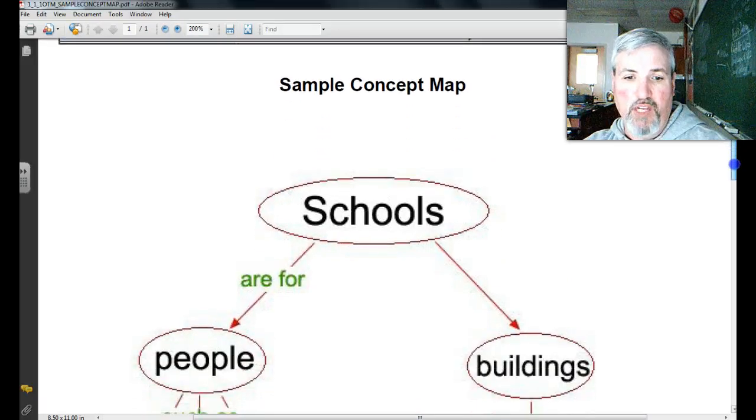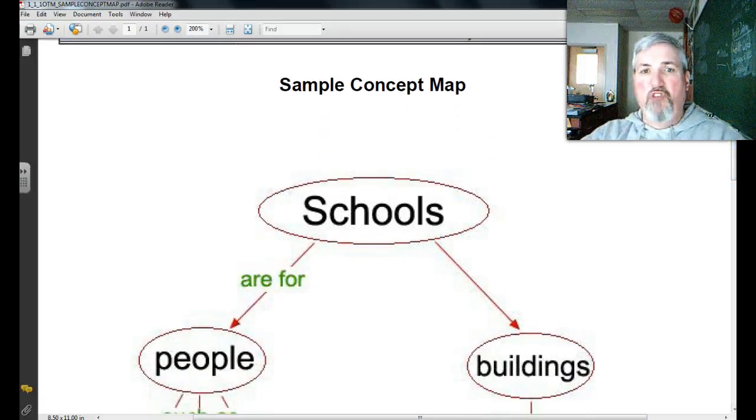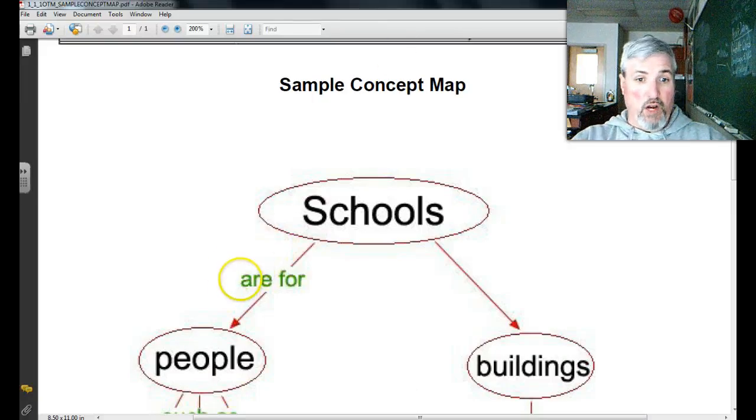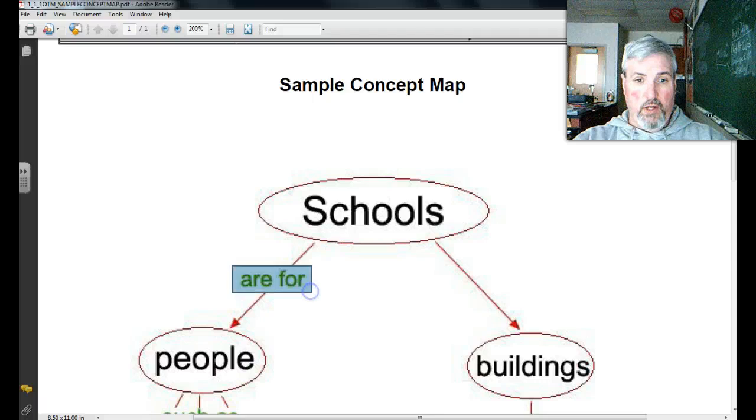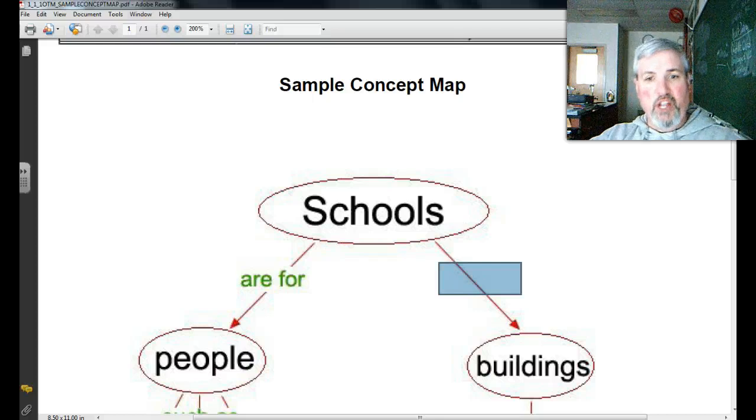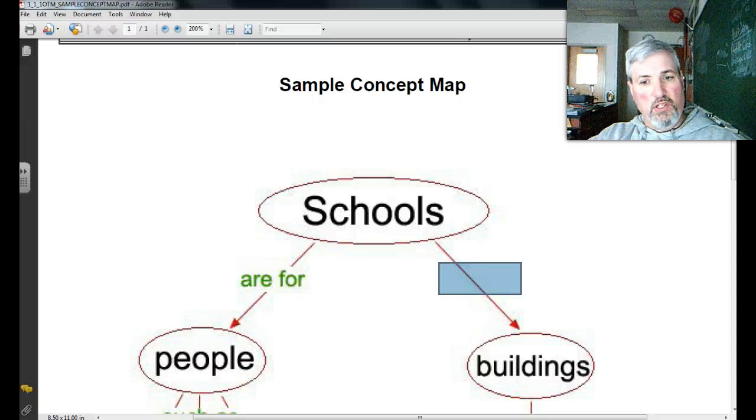And I'm going to give you the first level. Schools are for people. So you can see the words are for right here. People. Over here, there's nothing. I want you to put a word there to show the relationship between schools and buildings. That when a person reads this, they'll say, oh, this is how buildings and schools are related.